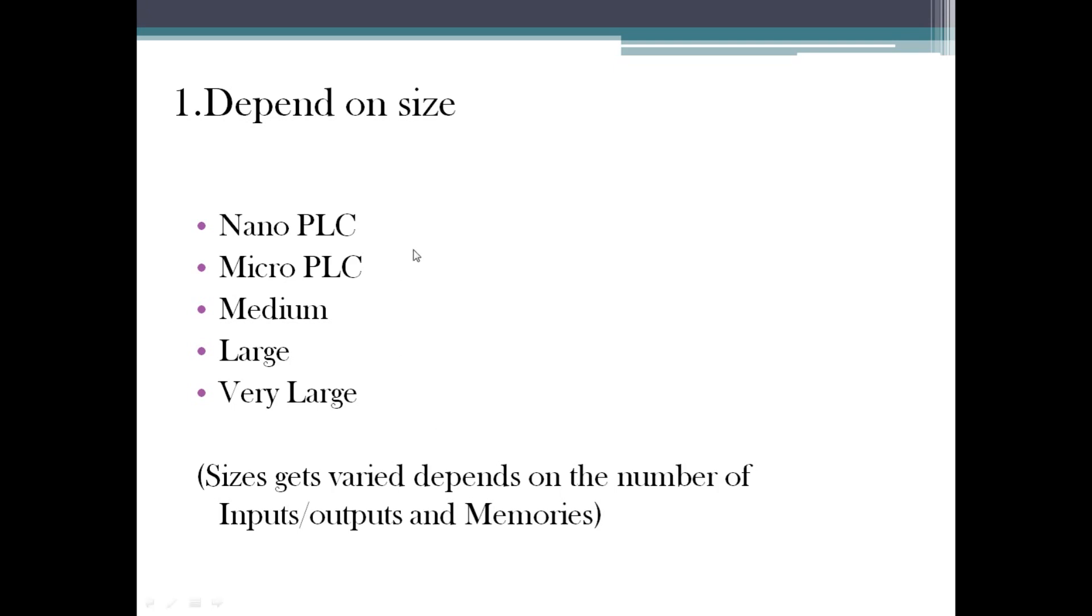These are the general categories for nano PLC. Nano PLC you can keep it in a short pocket, that much small it will be. Micro PLC is, comparing to nano, big. In oil and gas industries they will be using a very large scale PLC.